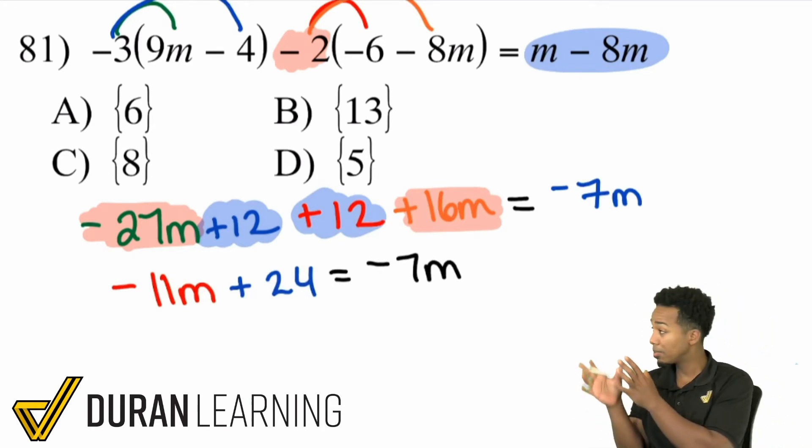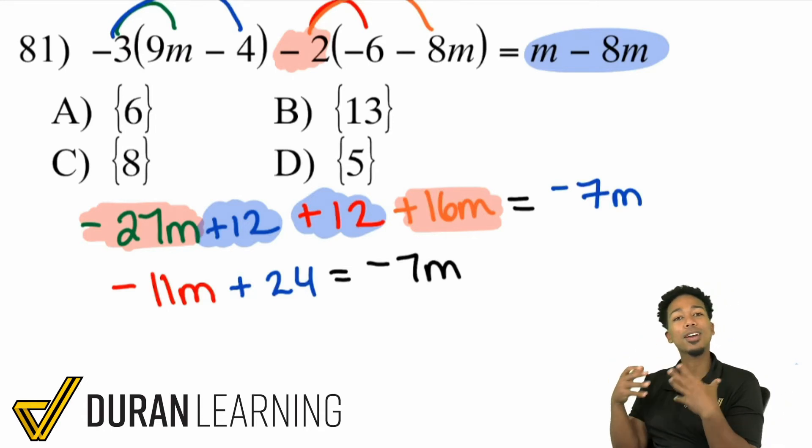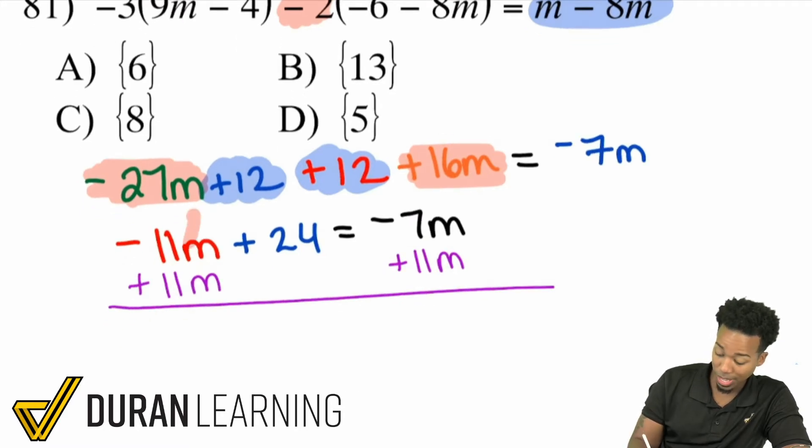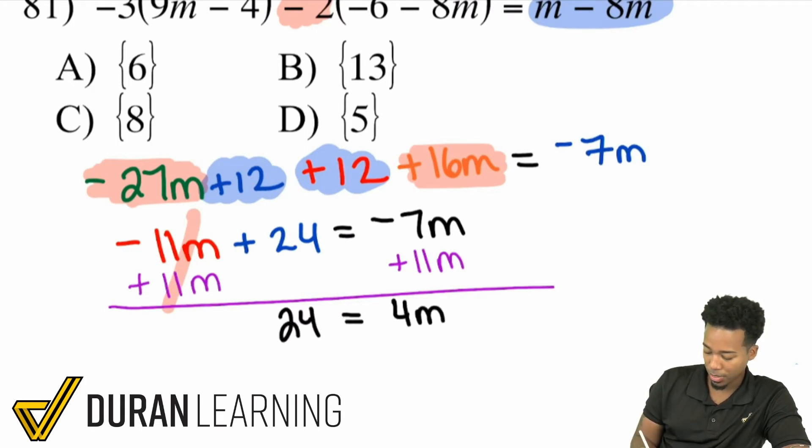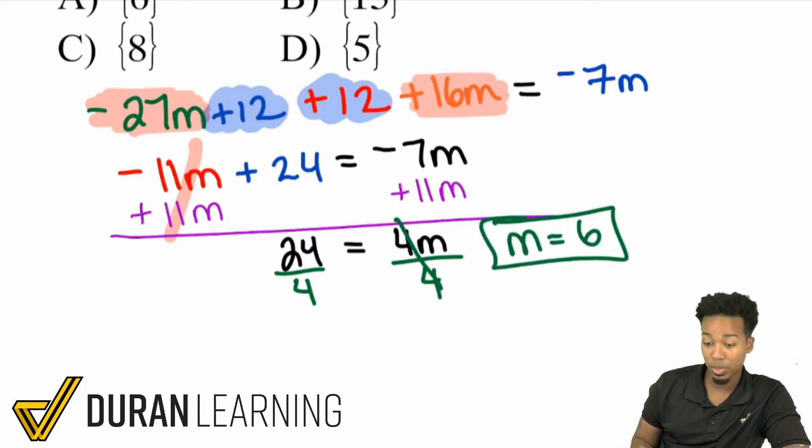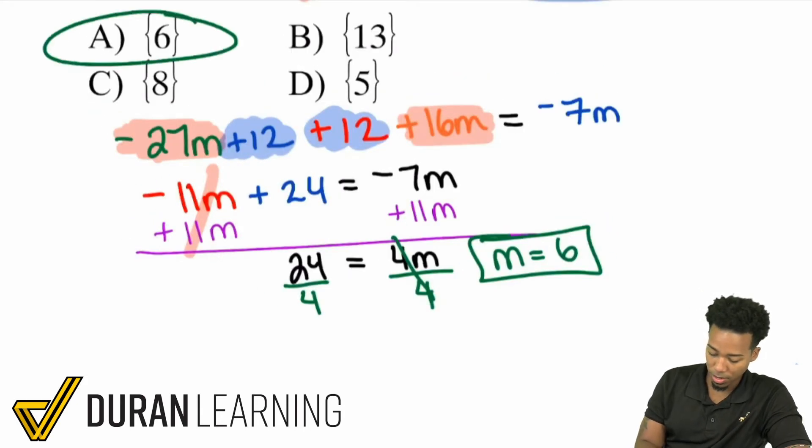Check it out. This craziness can be turned into something very manageable. It's all about taking it one step at a time. What we're going to do is move that 11m over. Remember, we do that by doing the opposite operation. Since we're subtracting 11m, I'll add 11m to both sides. This is going to cancel out on the left side, giving us 24 equals positive 4m. Our last step, divide both sides by 4. Booyah! We have m equals 6, and we are set. There's the answer, it's A, and we're good.